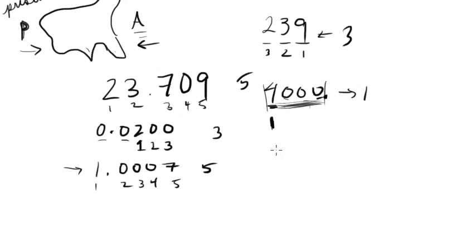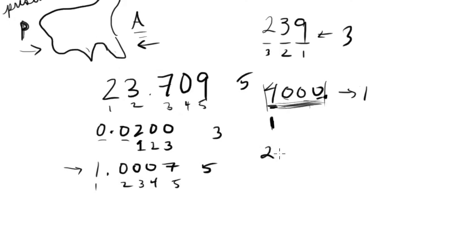Anyway, let's try 2,076.02. Well, we're present, so we start from here: one, two, three, four, five, six, done. So it would be six sig figs.